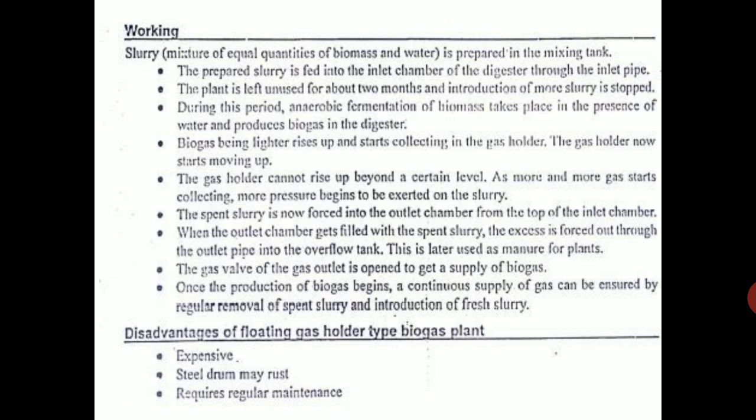The working is the same as a fixed dome. The prepared slurry is fed to the inlet chamber of the digester. The plant is unused for the initial two months while slurry is being added. Fermentation of the biomass then takes place in the presence of water and in the absence of air, which produces biogas in the digester. Biogas, being lighter, rises up and starts collecting in the gas holder, which then begins moving up.